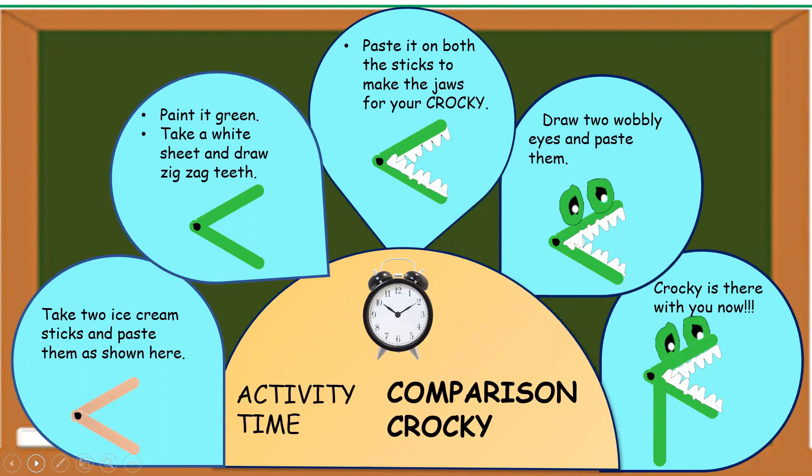Draw two wobbly eyes and paste them. And Crocky is there with you now. So, whenever you sit for comparison of numbers, you can keep the Crocky towards the greater number.